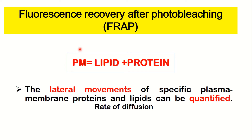This technique is FRAP, which stands for Fluorescence Recovery After Photobleaching. This technique is mainly used in cell biology. It is used to detect the lateral movement of specific proteins and lipids in the plasma membrane — how much lipid or protein is laterally moving and the rate of diffusion.